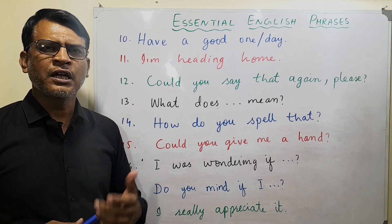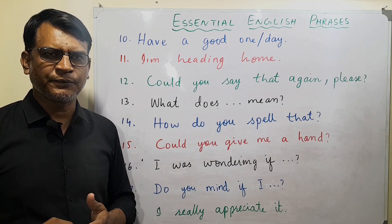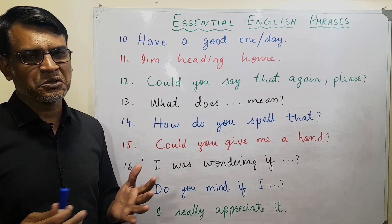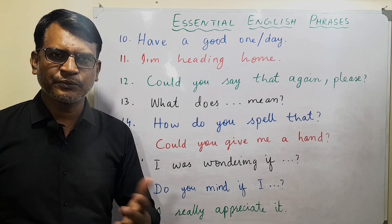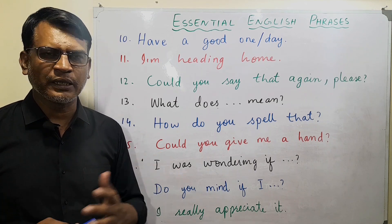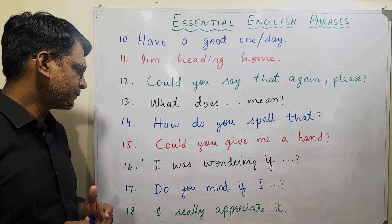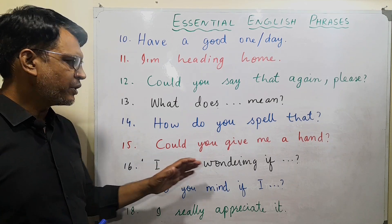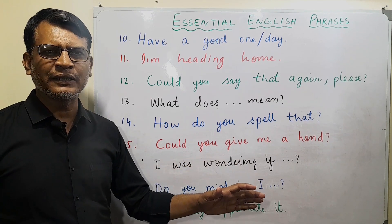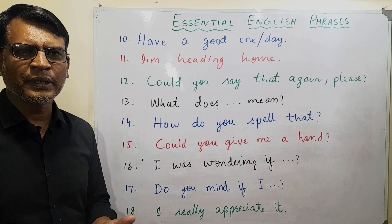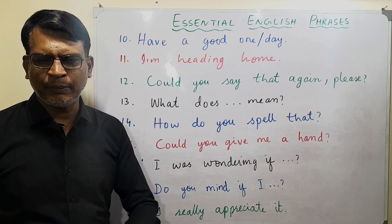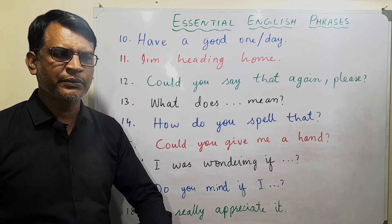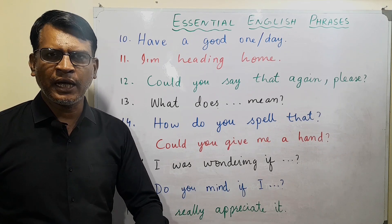For example, somebody said a difficult word, so you say 'How do you spell that?' Then 'Could you give me a hand?' — I'm in trouble, I need some help. Maybe I'm carrying two bags and it is difficult for me, so I say 'Could you give me a hand?'